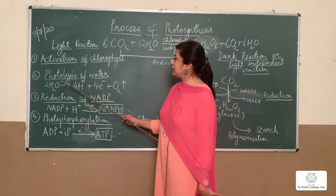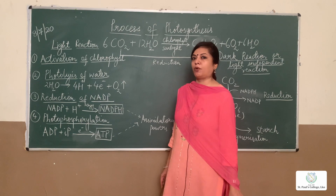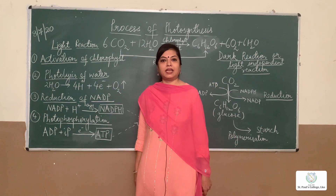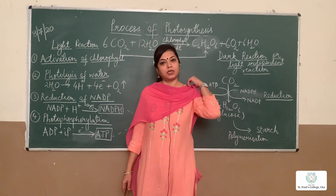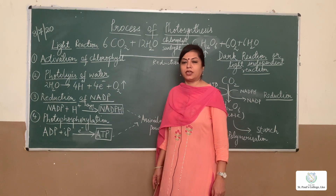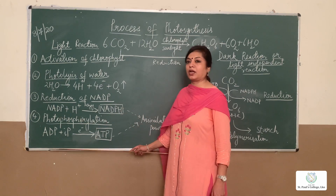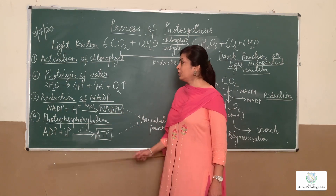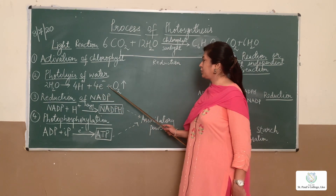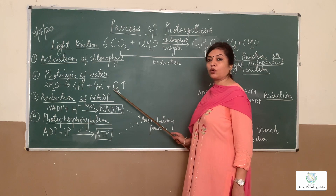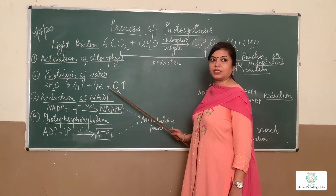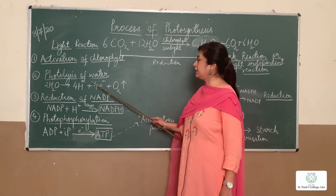These energetic electrons bring about the second and very important step during light reaction: photolysis. Photo means light and lysis means splitting — so photolysis is the splitting of water in the presence of light. This chemical equation represents photolysis. Two molecules of water release four hydrogen ions, four electrons, and oxygen gas. Oxygen gas is one of the main end products of light reactions. If asked the main end product of light reaction, it is oxygen gas.